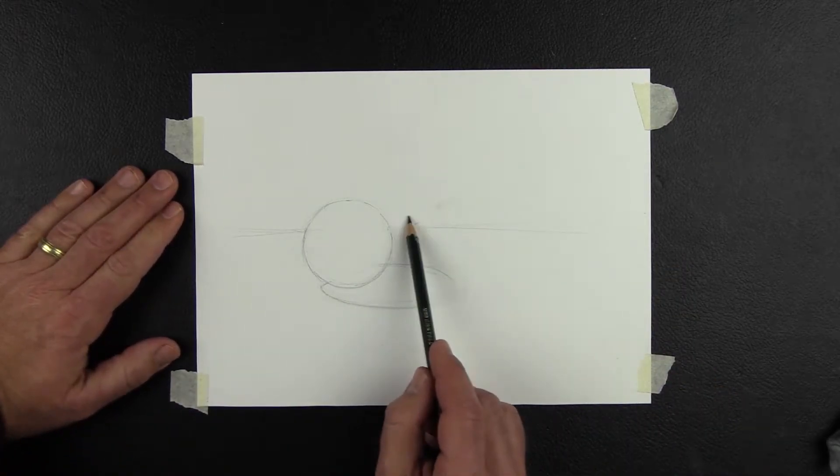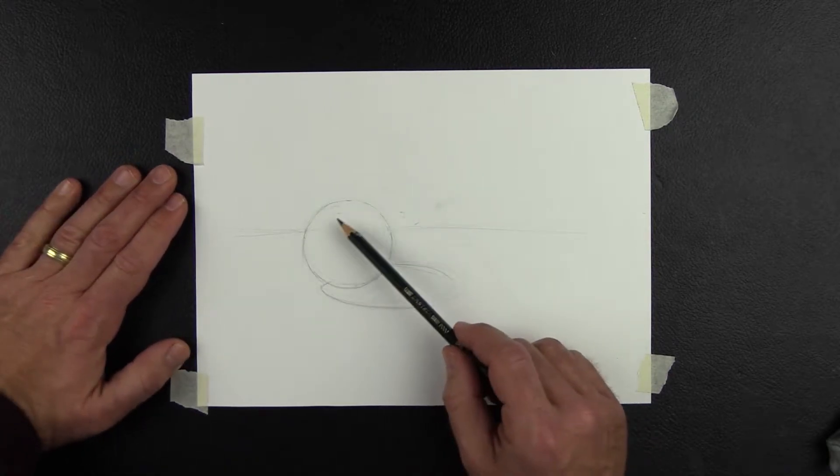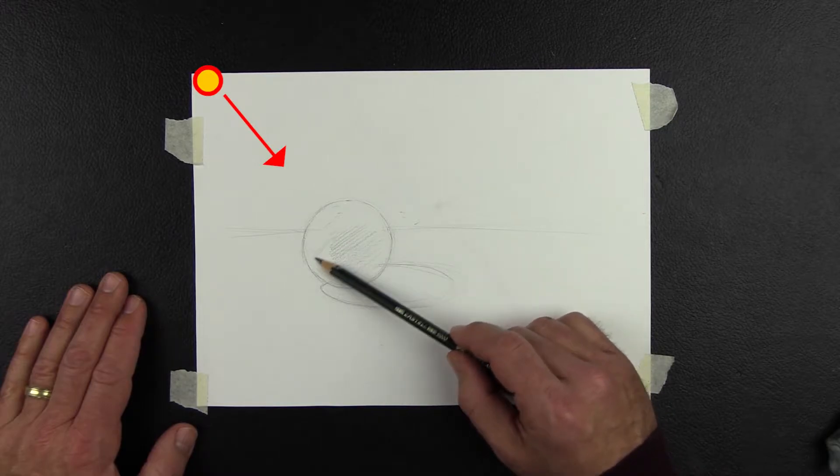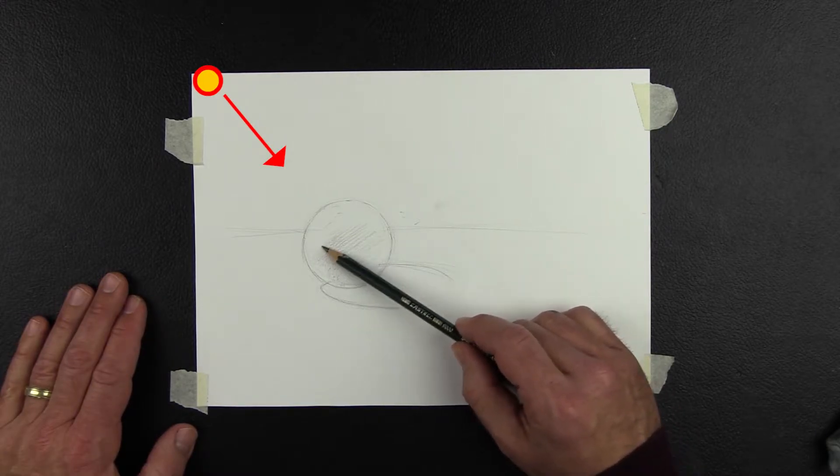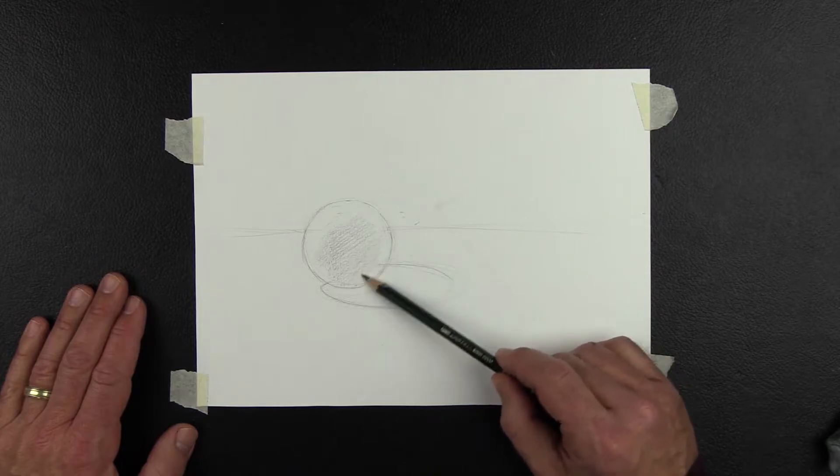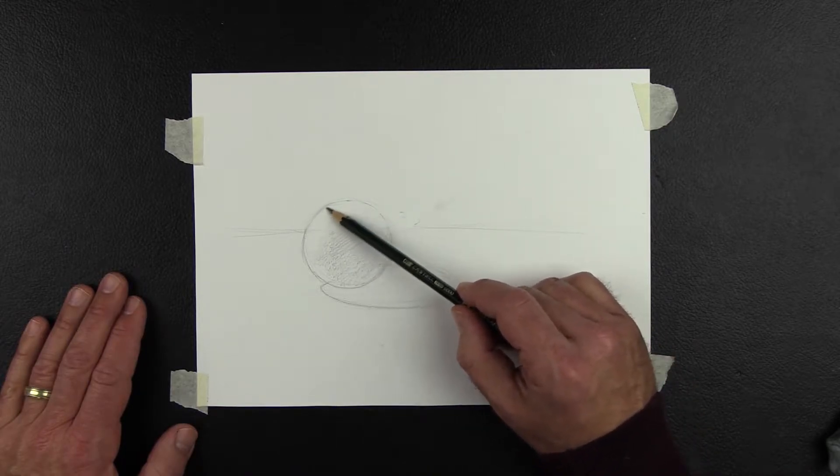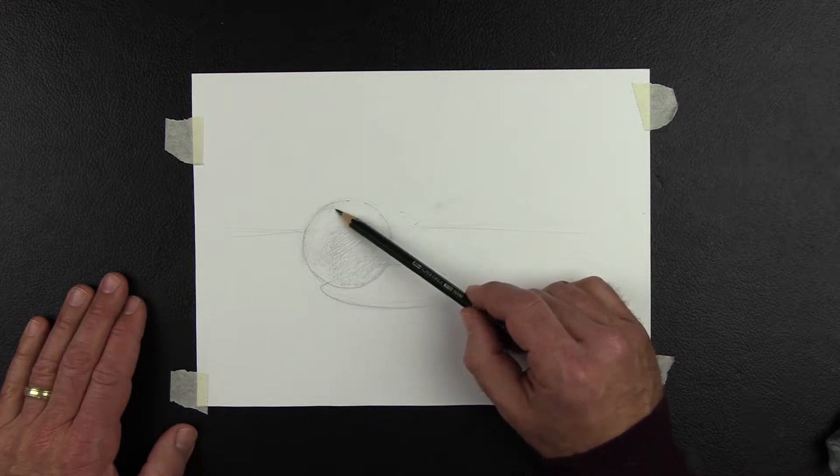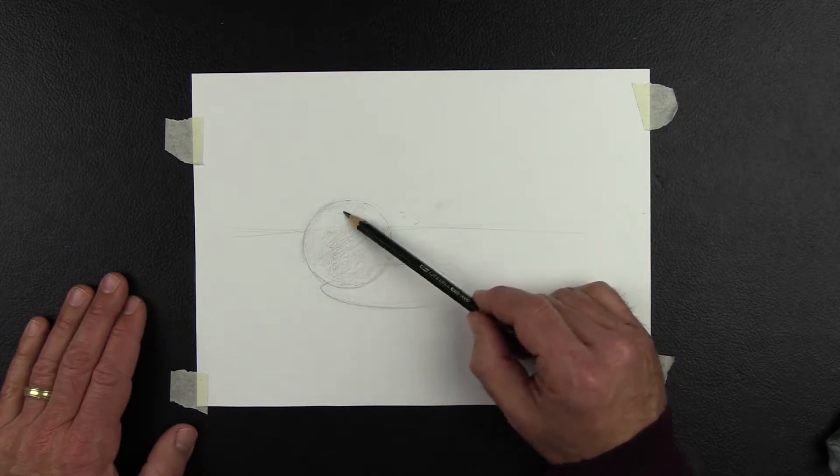I begin shading in the sphere everywhere except for the highlight. In this drawing I place my light source in the upper left corner again. Even though I'm shading quickly I can still keep the shading fairly smooth. The key is to keep a light touch and gradually build layers of shading to achieve the darker values.